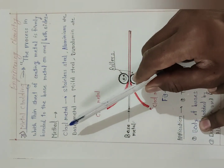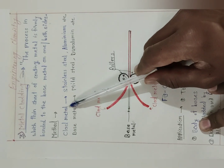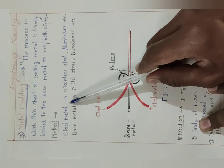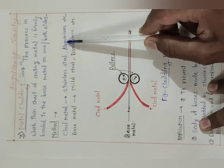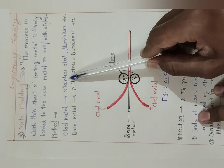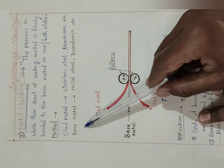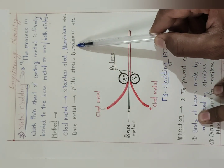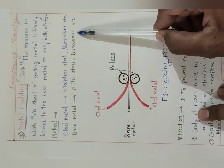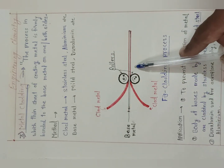The clad metal — the metal used in the form of a thin sheet for cladding purposes — can be stainless steel or aluminum. The base metal can be mild steel or duralumin. Now we will see how this metal cladding takes place.